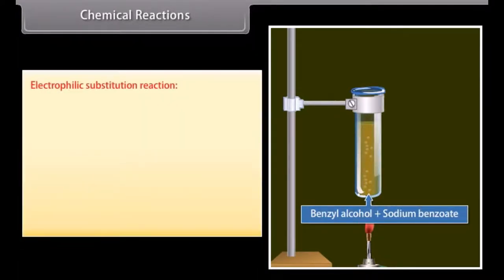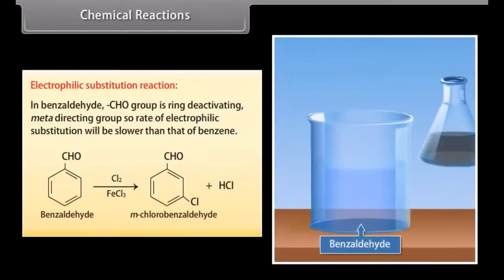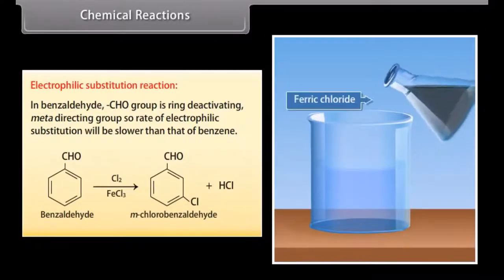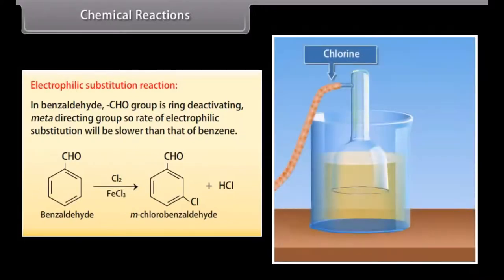Electrophilic substitution reaction: In benzaldehyde, the aldehyde group is a ring-deactivating, meta-directing group, so the rate of electrophilic substitution will be slower than that of benzene. Benzaldehyde reacts with chlorine and ferric chloride solution and it forms meta-chlorobenzaldehyde and hydrochloric acid.